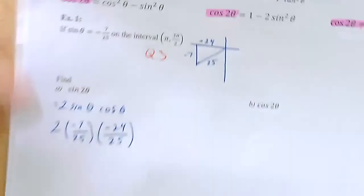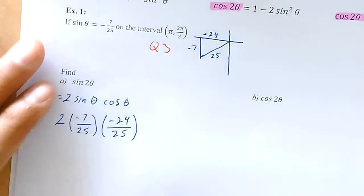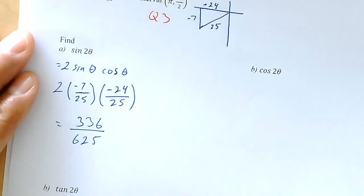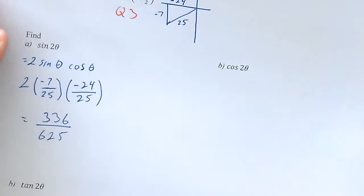Now I can multiply those together: 2 times sine times cosine, and doing the mental math I get 336 over 625 for the sine of 2 theta. Let's move on.